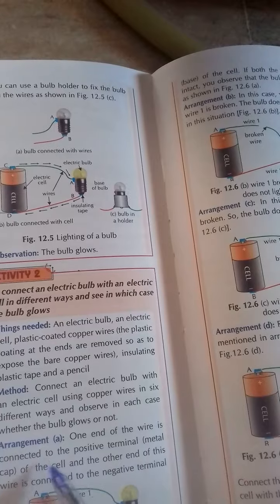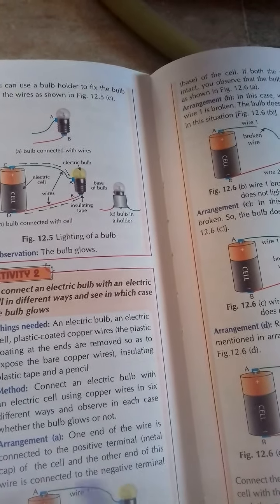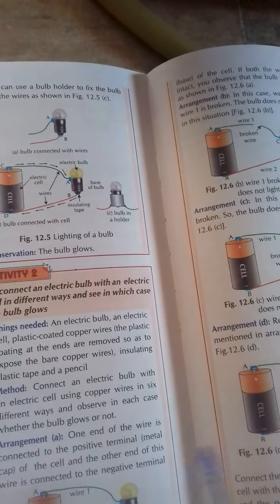The arrangement: one end of the wire is connected to the positive terminal, the metal cap of the cell, and the other of this wire is connected to the negative terminal.